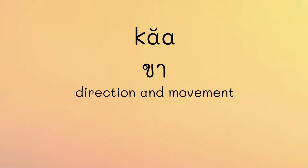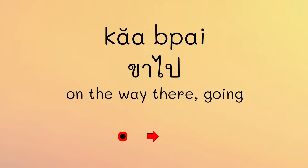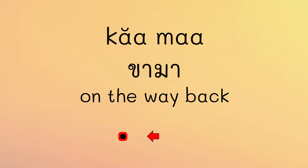Finally, ขา is used with directional words to indicate legs or instances of going somewhere. For example, ขาไป — ไป means to go — ขาไป means on the way there or going. It describes the initial leg of a journey, traveling from one place to another, and can be used with various modes of transportation such as cars, buses, trains, and airplanes. ขามา — มา means to come — ขามา means on the way back or returning, describing the return leg of a journey.